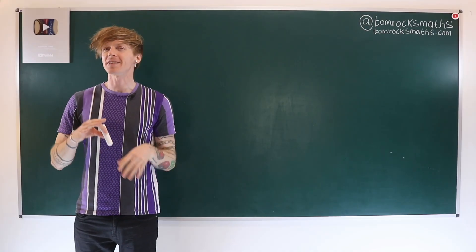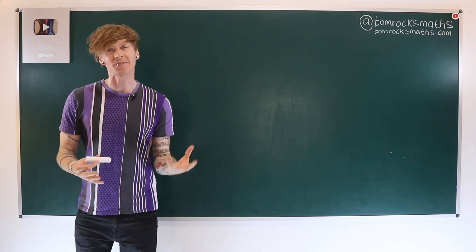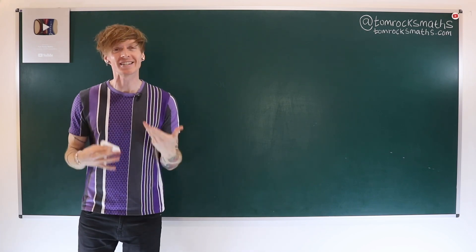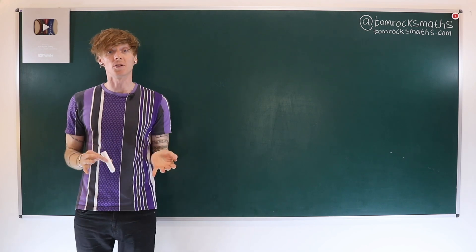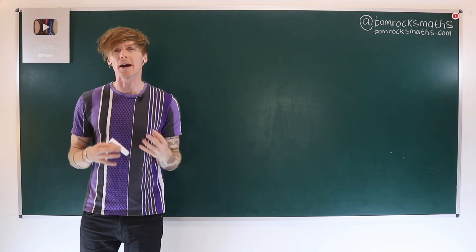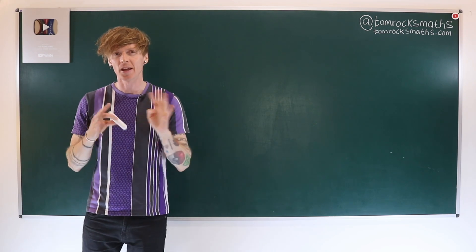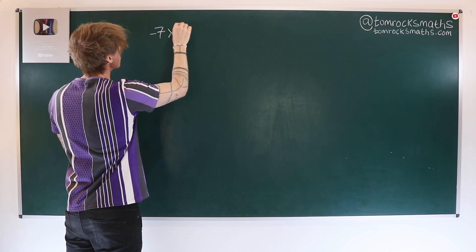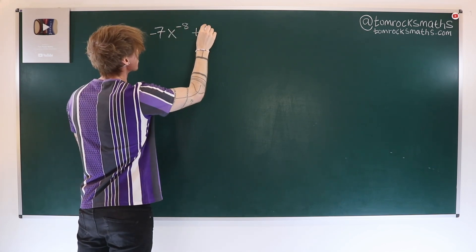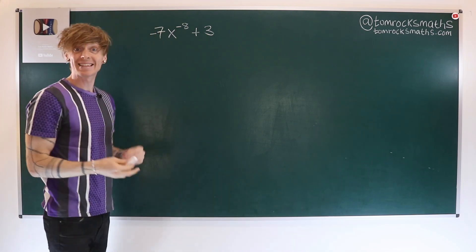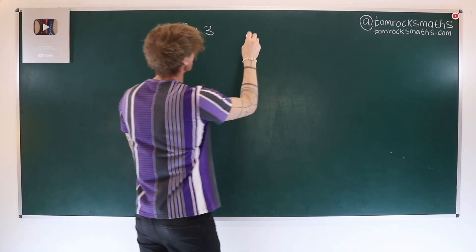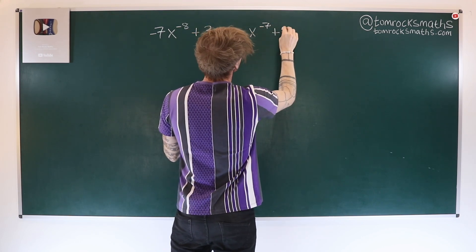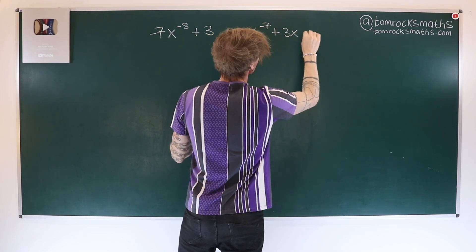Before we get to the actual song I do need to briefly explain a couple of mathematical concepts to help you to better understand some of the lyrics. First of all, Sadiq will be singing about two polynomial functions. The first is minus 7 times x to the power of minus 8 plus 3, and the second function, it's very similar, is x to the minus 7 plus 3x plus c.